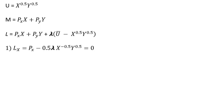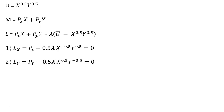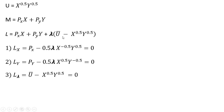The first thing we'll do is get the partial derivative of the Lagrangian with respect to good x. Doing that, we get this result here, setting that equal to zero. We take the partial derivative of the Lagrangian with respect to good y and we get this result here. And we take the partial derivative of the Lagrangian with respect to lambda, and we just get back our constraint.